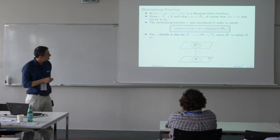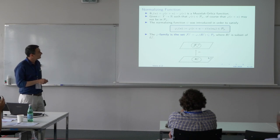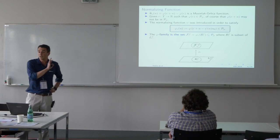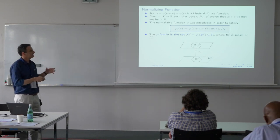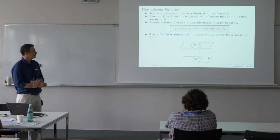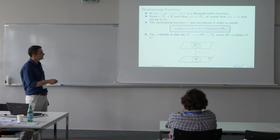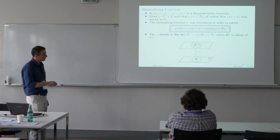An important point is that our probability model — which we call the Phi-family — is going to be written using a Psi function, which we call the normalizing function. This work investigates some properties for some cases of this normalizing function. The Phi-family is the mapping of the Musielak-Orlicz space onto the F-of-Phi space, which is based importantly on the boundary of that subset.